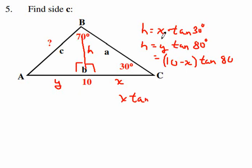So now we know that that equals that. So now we know that X tan 30 equals 10 minus X times tan 80. Can you buy that? This is called algebra, by the way. If you don't like this, don't worry. This isn't essential math. This is like pre-cal math.